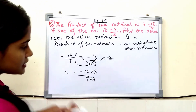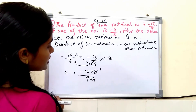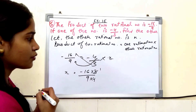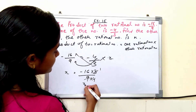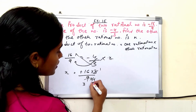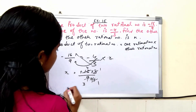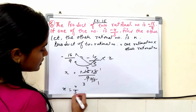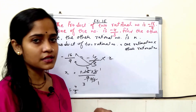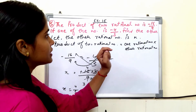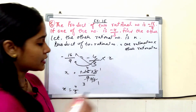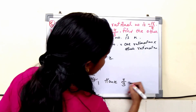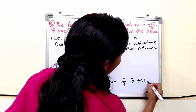After cancelling, we get: minus 4 and minus 4 cancel, 3 and 9 simplify, giving us 4 upon 3. So the other rational number is 4 upon 3. Multiplying minus 4 upon 3 by 4 upon 3 gives us minus 16 upon 9, which confirms our answer. Hence, 4 upon 3 is the other rational number.